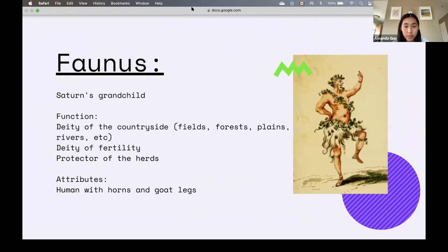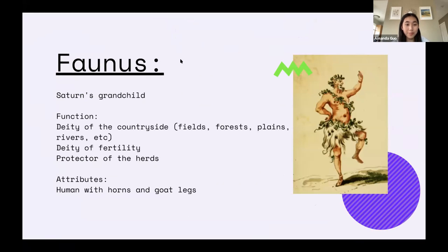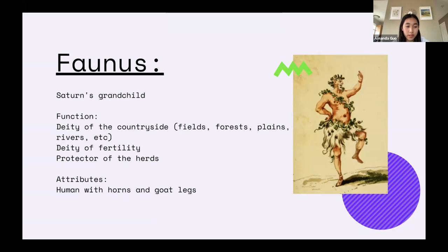The satyrs basically look the same as Pan, but they are his cortege — rustic fertility spirits of the countryside and the wilds, so they follow Pan. Then we have Faunus, who is Saturn's grandchild. Saturn can also be called Cronos — he is the Olympians' father. Faunus is the deity of the countryside, which includes fields, forests, plains, and rivers, and he's also the deity of fertility and protector of herds. His attributes are also a human with horns and goat legs.